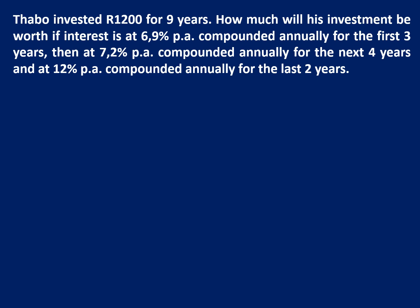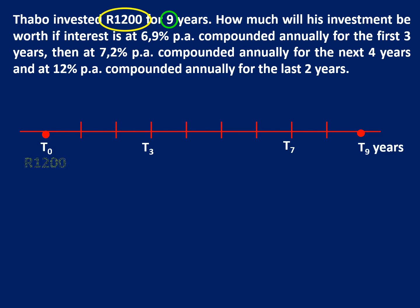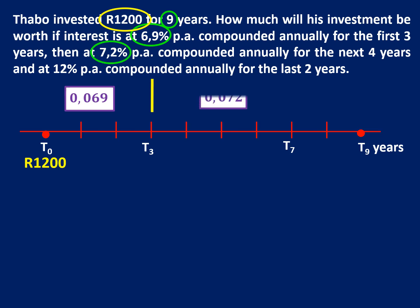On my timeline, R1,200 goes in at the beginning. 6.9% will be 0.069 in my formula, and it's like that for the first three years. Then 7.2% will be 0.072, and it's like that for the next four years — until the end of year seven, because three plus four gives me seven years. Then Tablo is such a good customer that he gets 12% for the last two years, so 0.12.